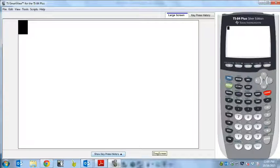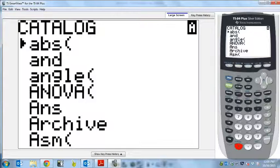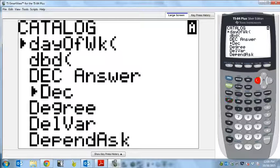In your calculator, hit second, zero. That's the catalog. That gives you every single function that your calculator does. Then go to diagnostic on. I usually look under the Ds and then go down to diagnostic on.